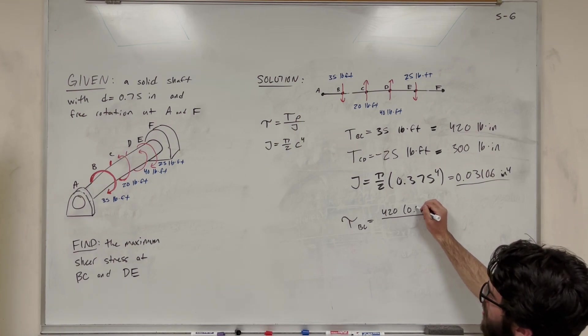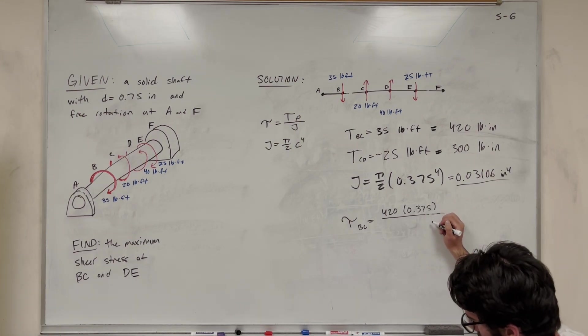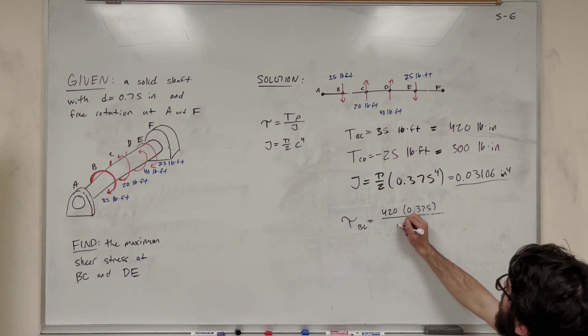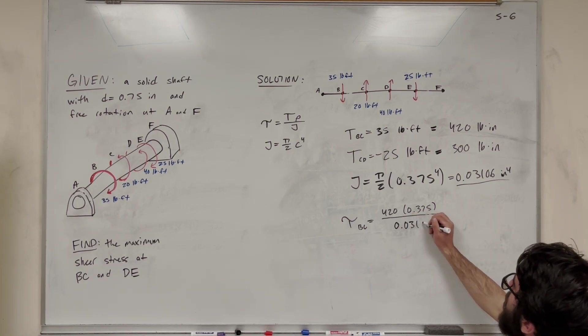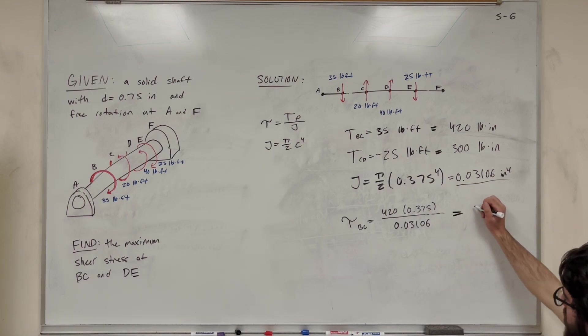So our radius, 0.375. And then over J, 0.03106. Do this, you got torque BC is 5070 psi.